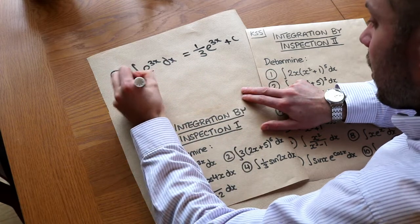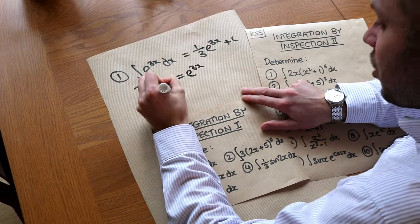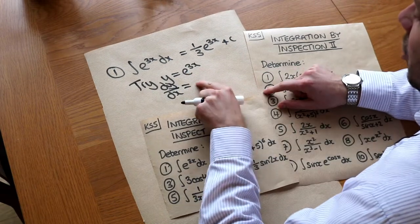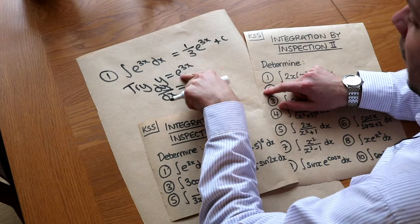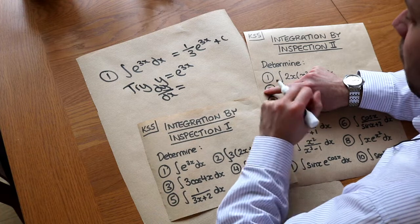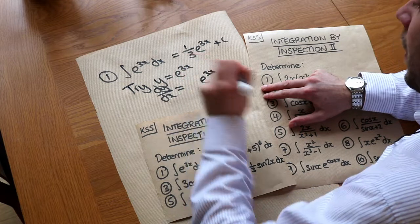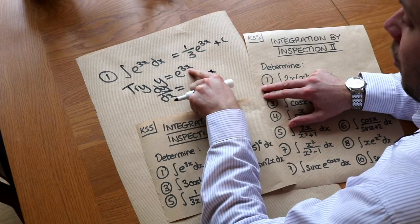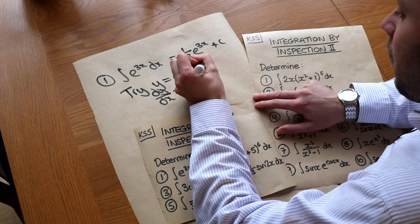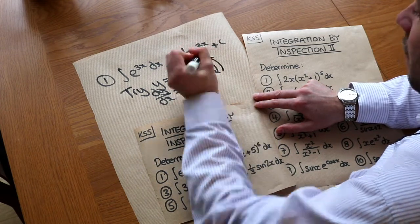Consider e to the 3x and let's differentiate this to see what happens. The chain rule says we do the outer function differentiated — the e to the something — and then we times by the inner function differentiated. So the outer function e to the blah differentiates to e to the blah, and then this inner function of 3x differentiates to give 3, and we times by that 3.